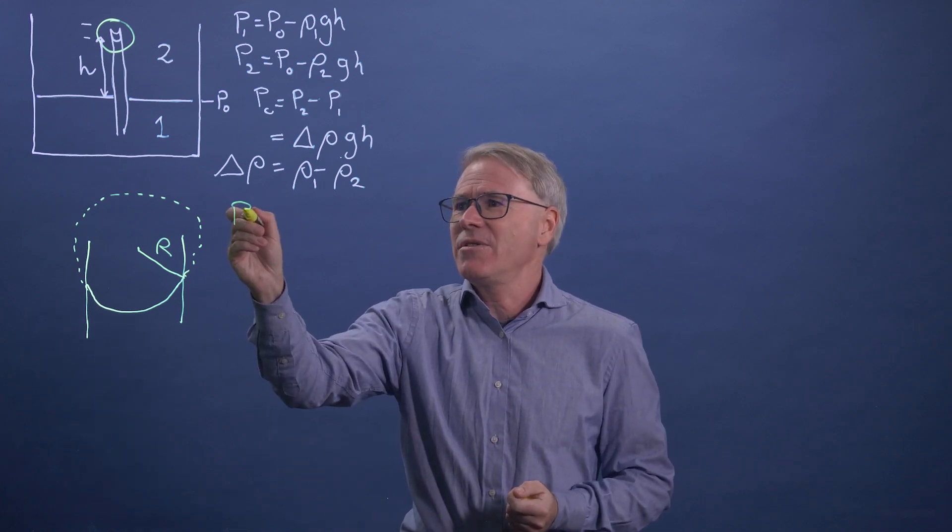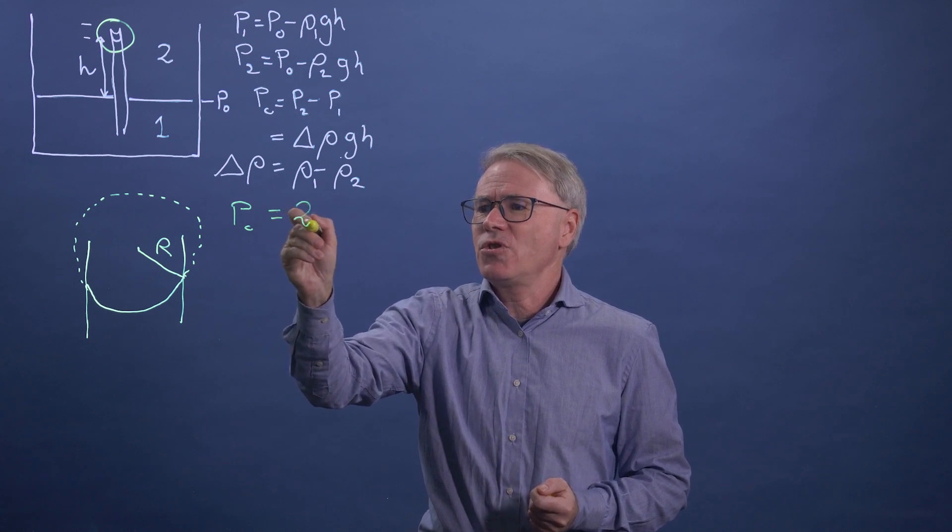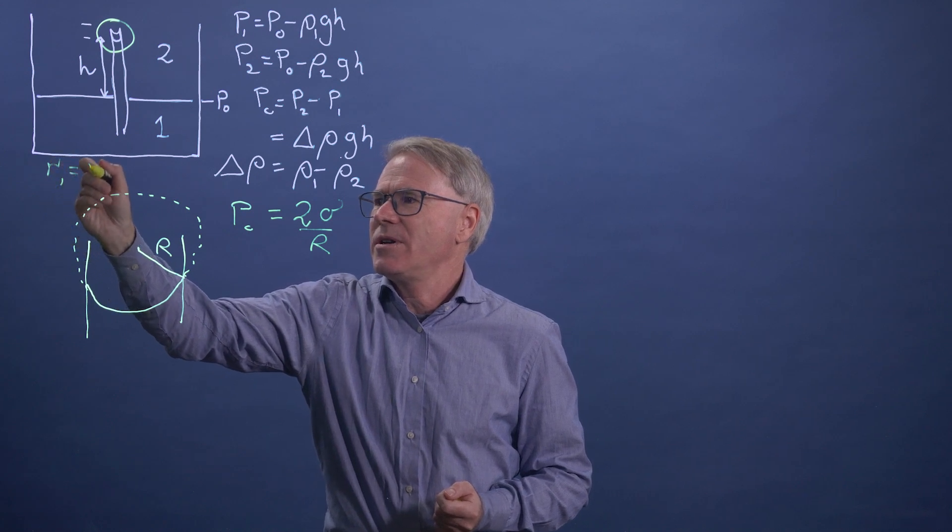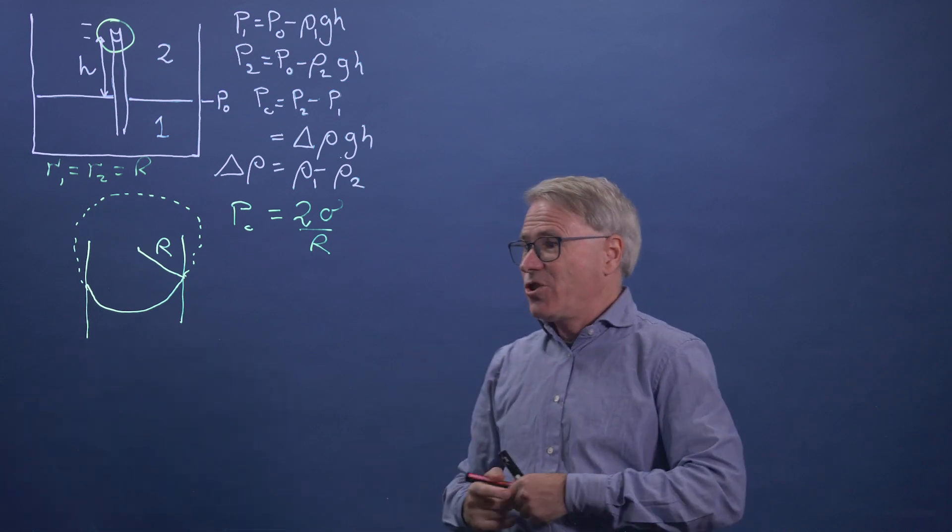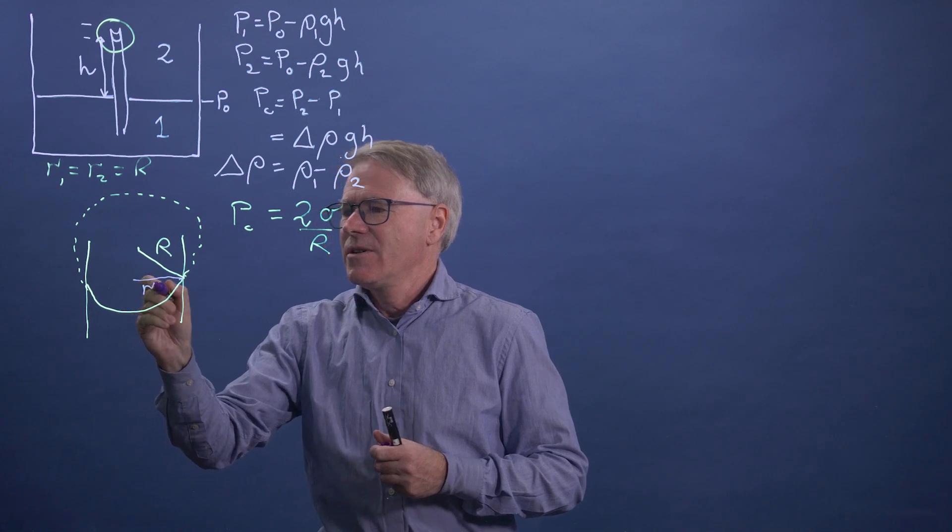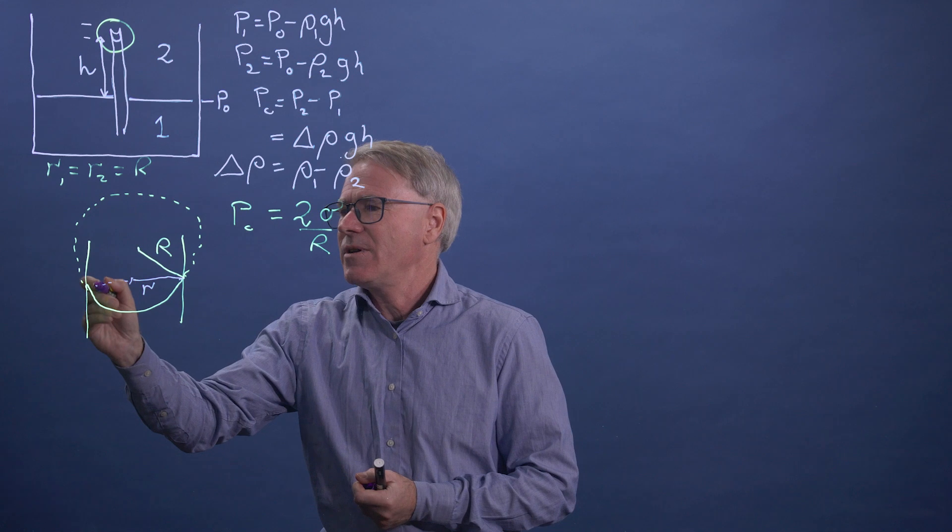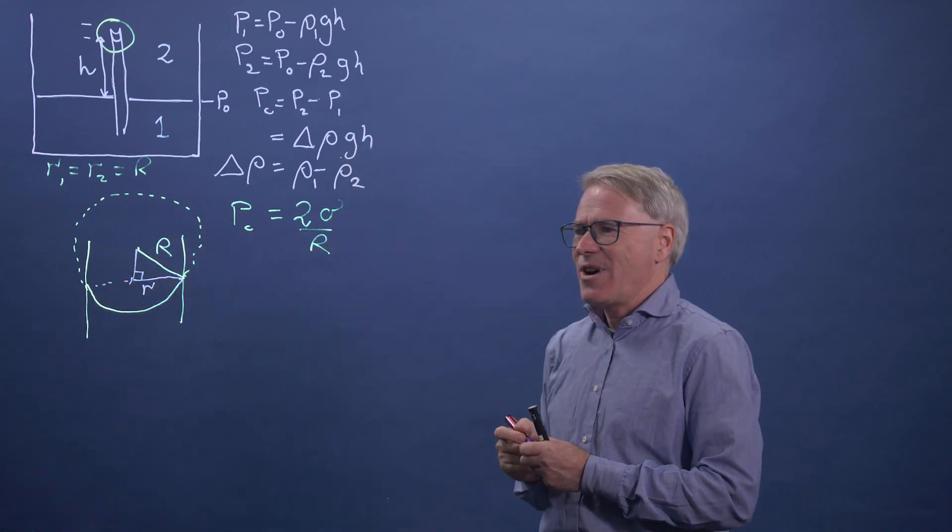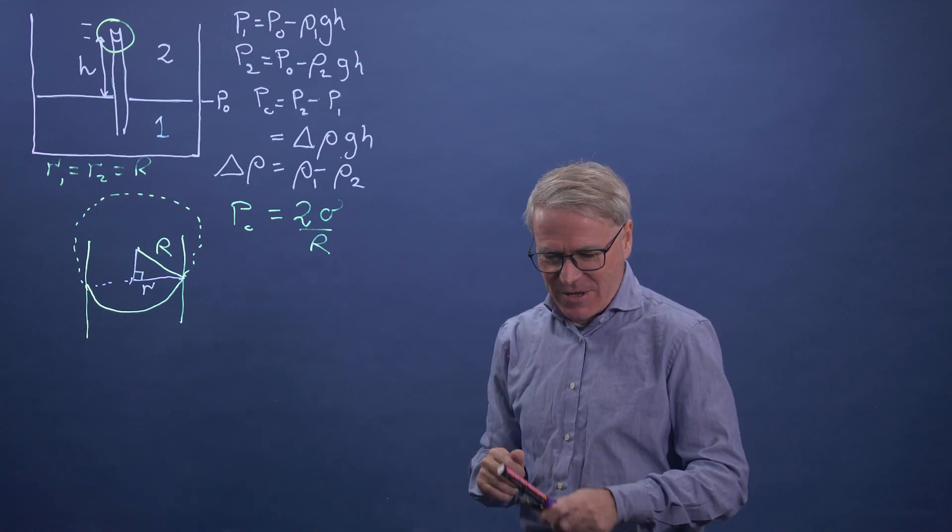So we're going to say that our capillary pressure is two sigma over R, because the two radial curvature R1 is R2, which is equal R. But we also know that the tube itself has a radius which we'll call little r. So this is halfway through the tube. So this we can imagine is a right angle like that by symmetry. But now we need to introduce the contact angle, don't we? So the contact angle is this angle here.